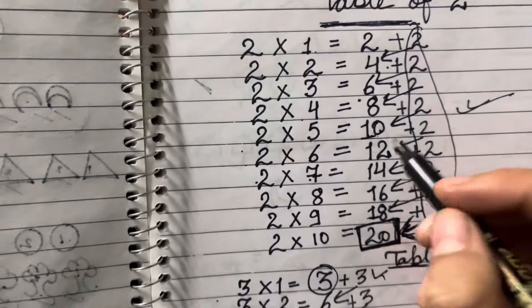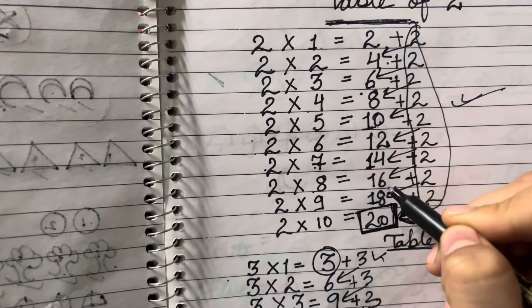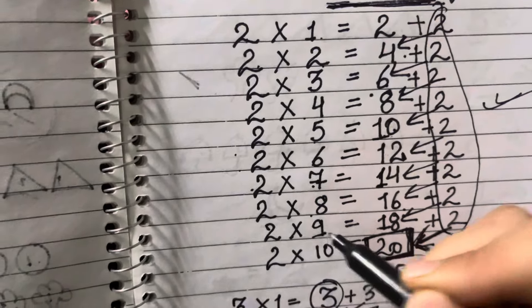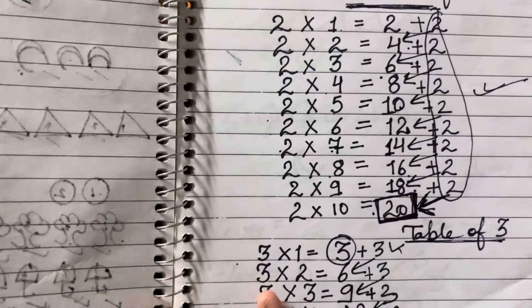2 7's are 14, 2 8's are 16, 2 9's are 18, 2 10's are 20. Very good.